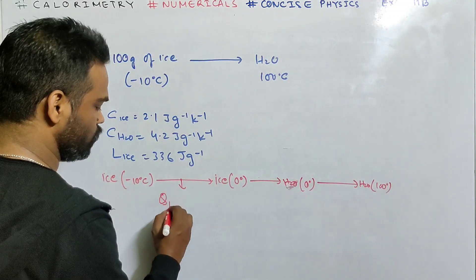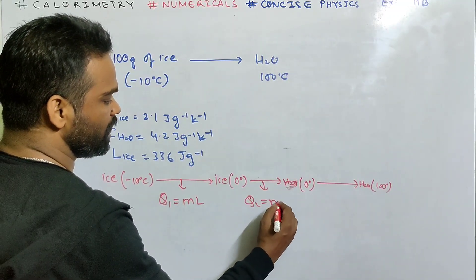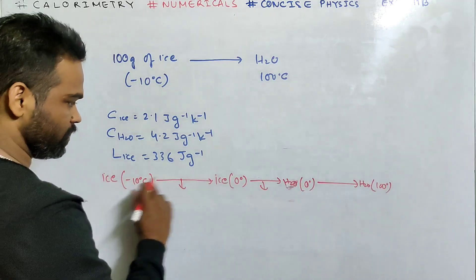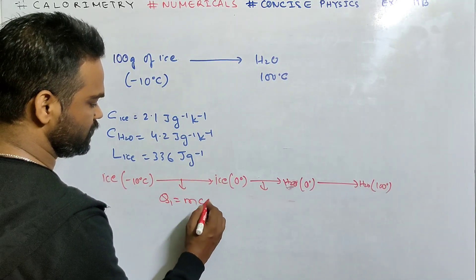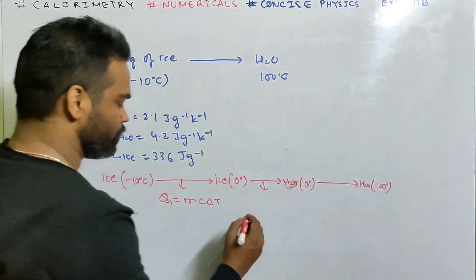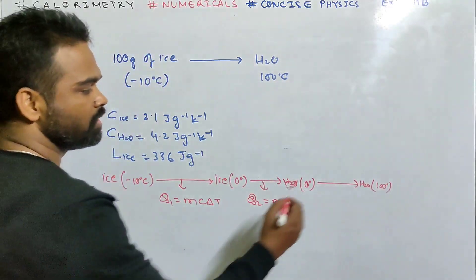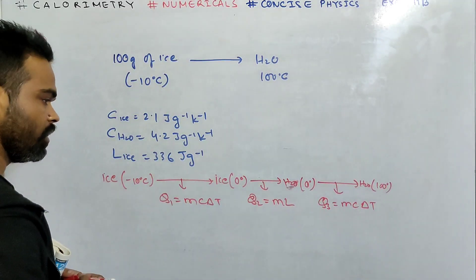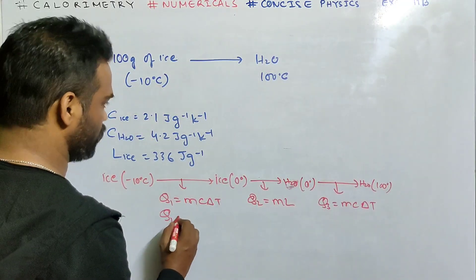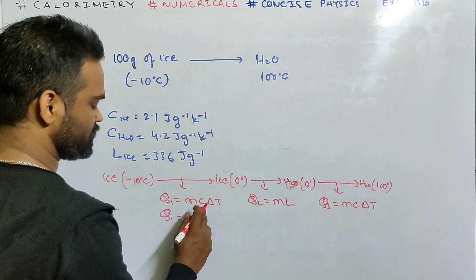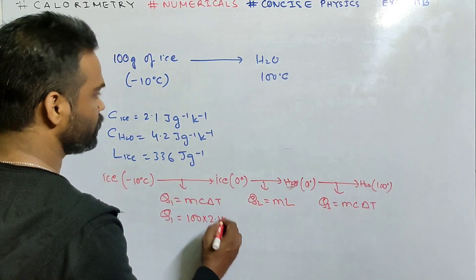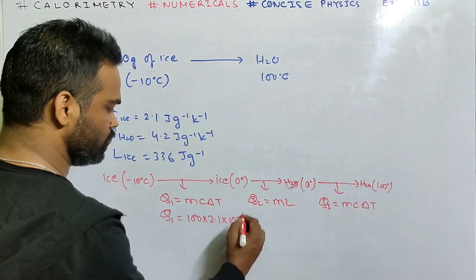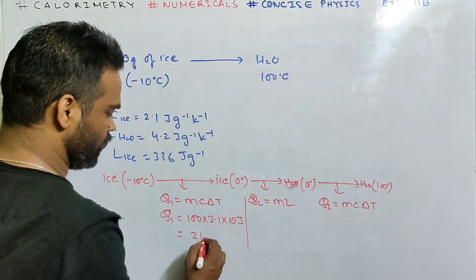Q1 is MCT for ice warming: M = 100 g, C of ice = 2.1 J/g/K, ΔT = 10. So Q1 = 100 × 2.1 × 10 = 2100 joule.